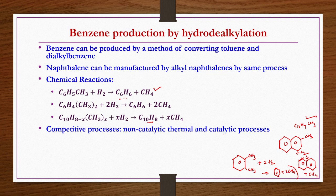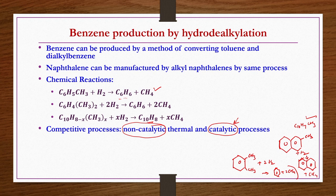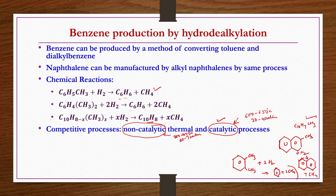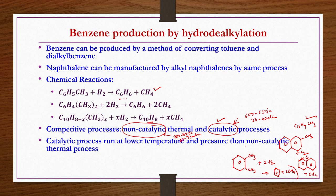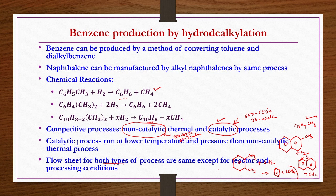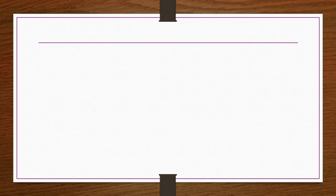Both catalytic and non-catalytic processes exist. Initially catalytic processes were developed, but to overcome patent royalty payment issues, non-catalytic processes were subsequently developed. Yield is approximately the same by either process. In the catalytic process temperature is 600 to 650 degrees centigrade and 30 to 40 atmospheres, whereas in the non-catalytic process 800 to 850 degrees centigrade and 60 to 70 atmospheres are used. The purpose of the catalyst is to reduce the severity of conditions required for the reaction.